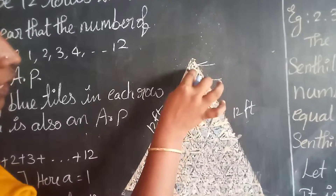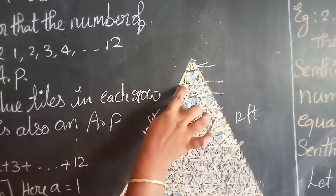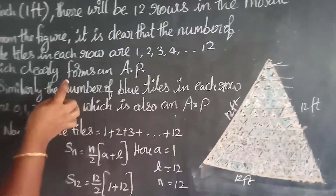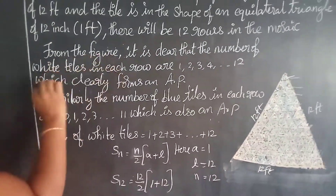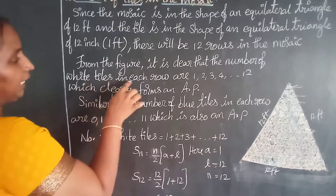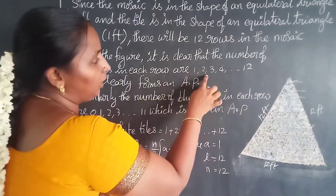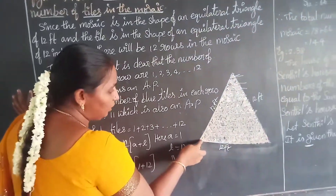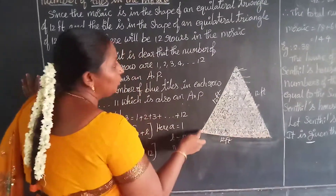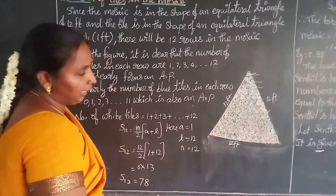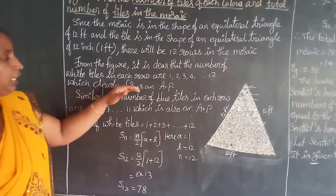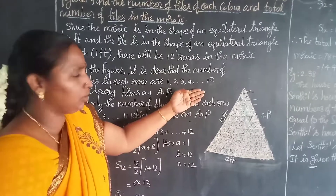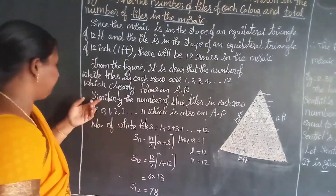White tiles in each row are 1, 2, 3, 4, and so on, up to 12 in the last row. This clearly forms an AP of natural numbers. Similarly, for the blue tiles: in the first row there are no blue tiles, in the second row one blue tile, and in the third row two blue tiles.